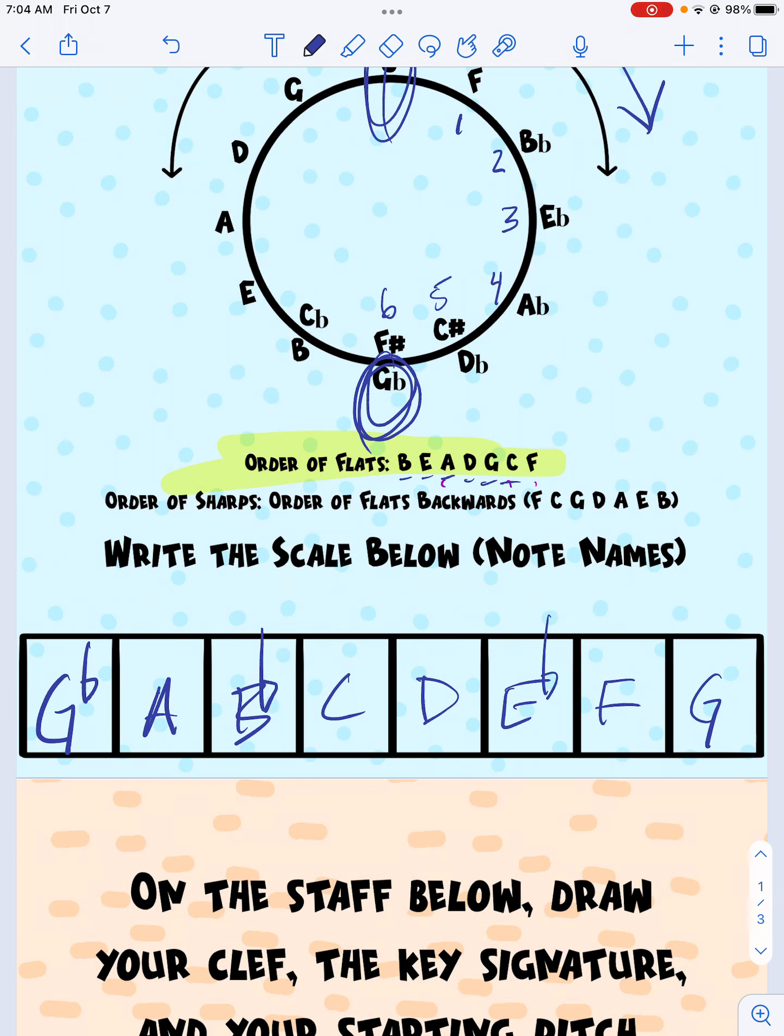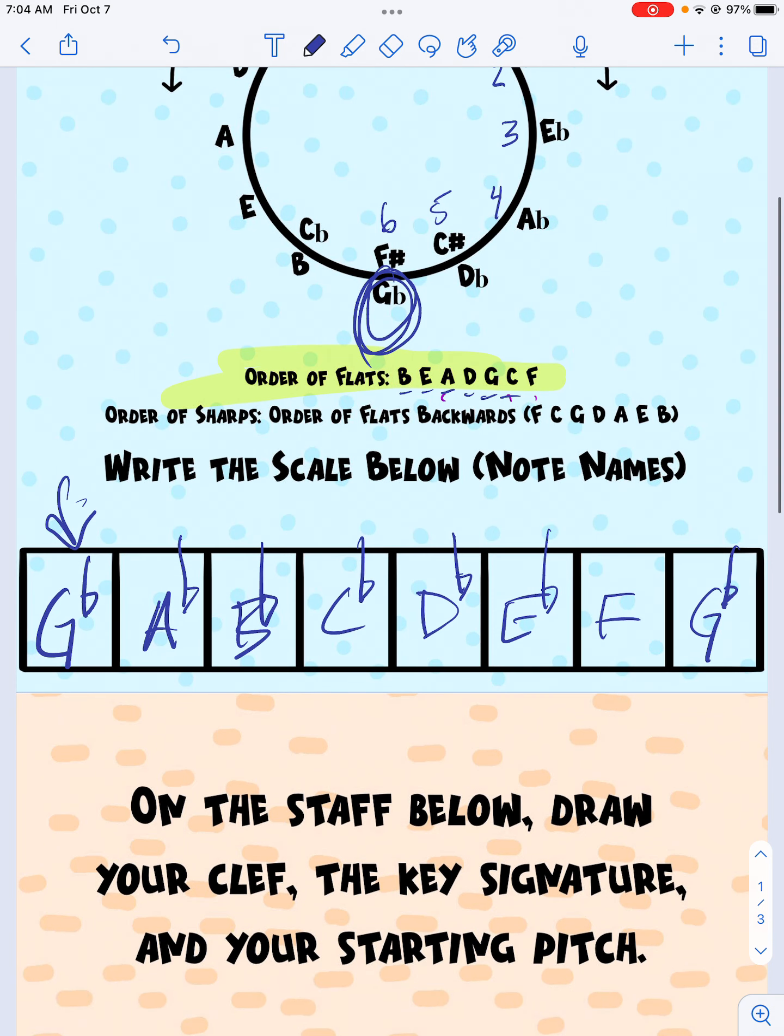Okay, so now I add those to my letter names down here at the bottom. B, E, A, D, G. This one was already flatted, and then there's another flat over here. And then the final one was C. So a lot of times I'll tell people on this scale, the only thing that's not flatted is F. So now I have letter names.